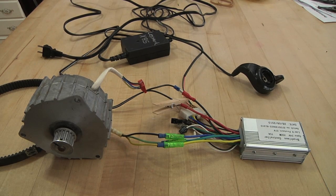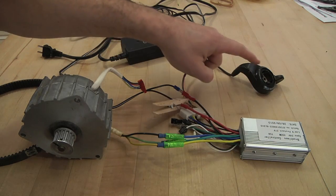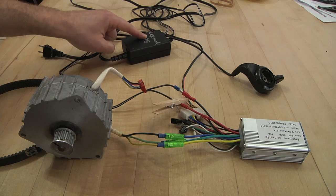So now what you see in front of you is the motor, a brushless motor controller, a Hall Effect thumb throttle, and a power supply.